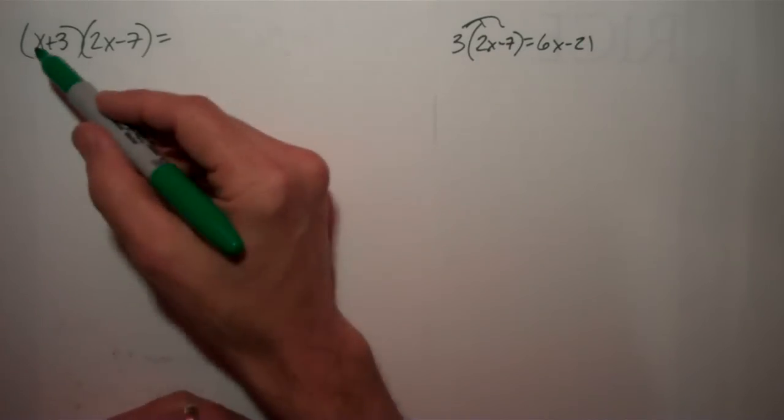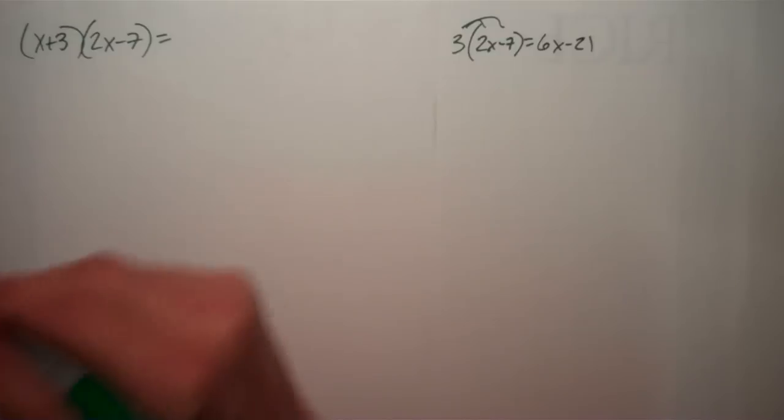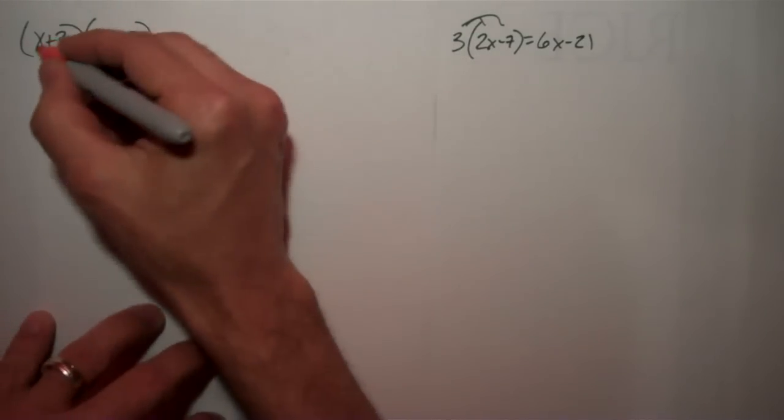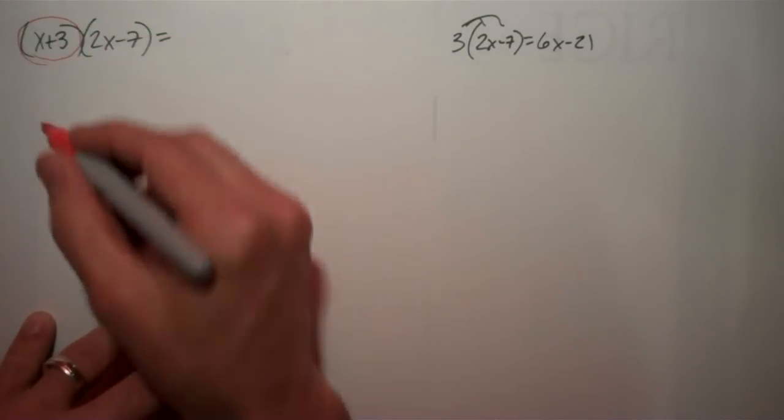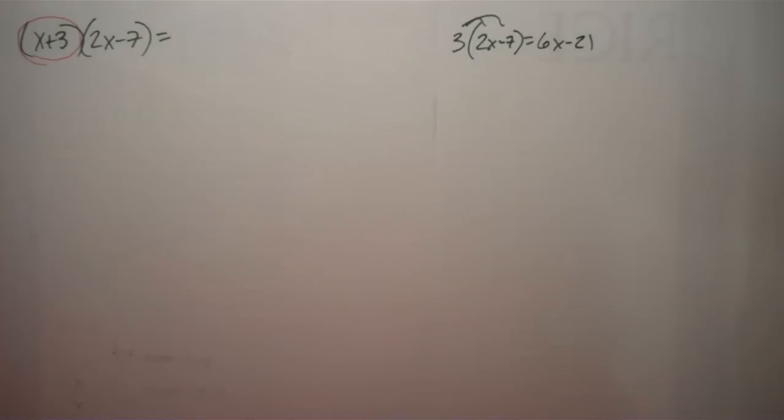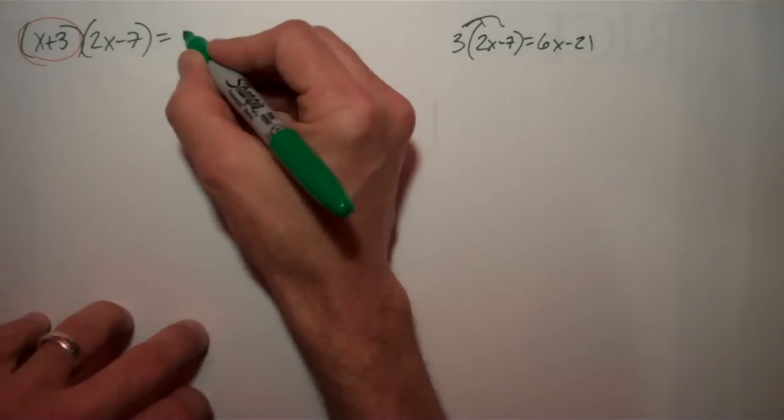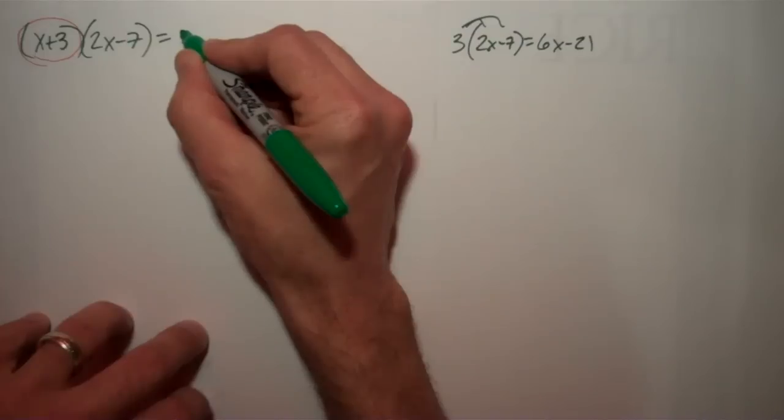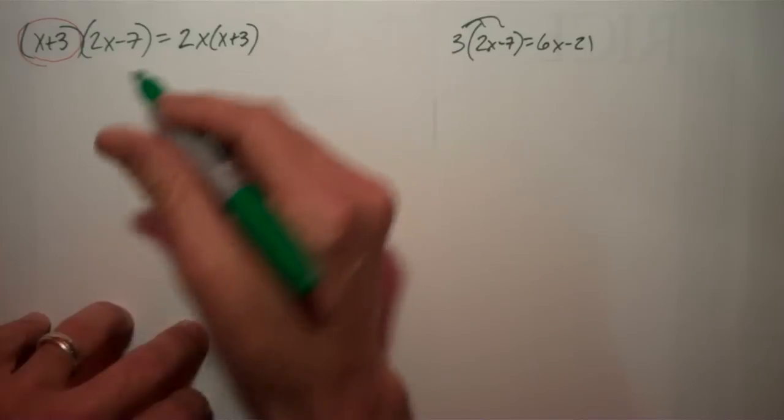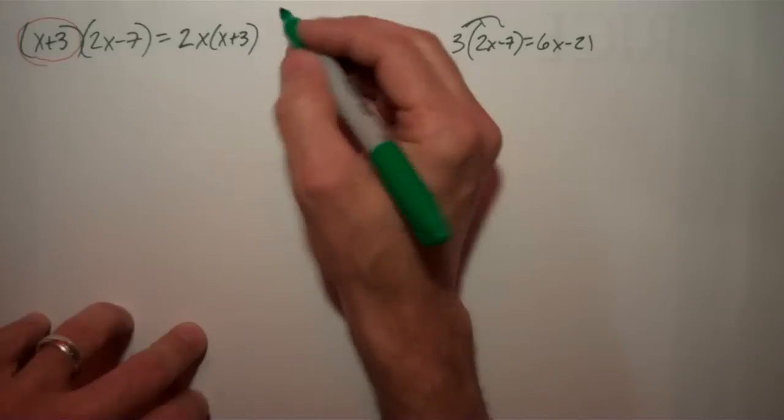But that's not what we have. We have a binomial times a binomial. So what I'm going to do is, I'm going to treat this binomial here as if it's one thing, like I did with the 3 there. And this is what I mean. I'm going to say, x plus 3 times 2x, which I'll write like this, 2x times x plus 3, minus 7 times x plus 3.